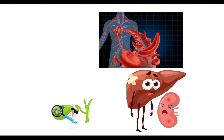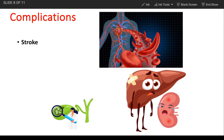Sickle cell anemia can lead to a host of complications. If sickle cells block blood flow to an area of the brain, stroke may occur. Signs include seizures, weakness in your arms and legs, sudden speech difficulties, and loss of consciousness. If your baby or child has any of these signs, seek medical treatment immediately, as a stroke can be fatal.